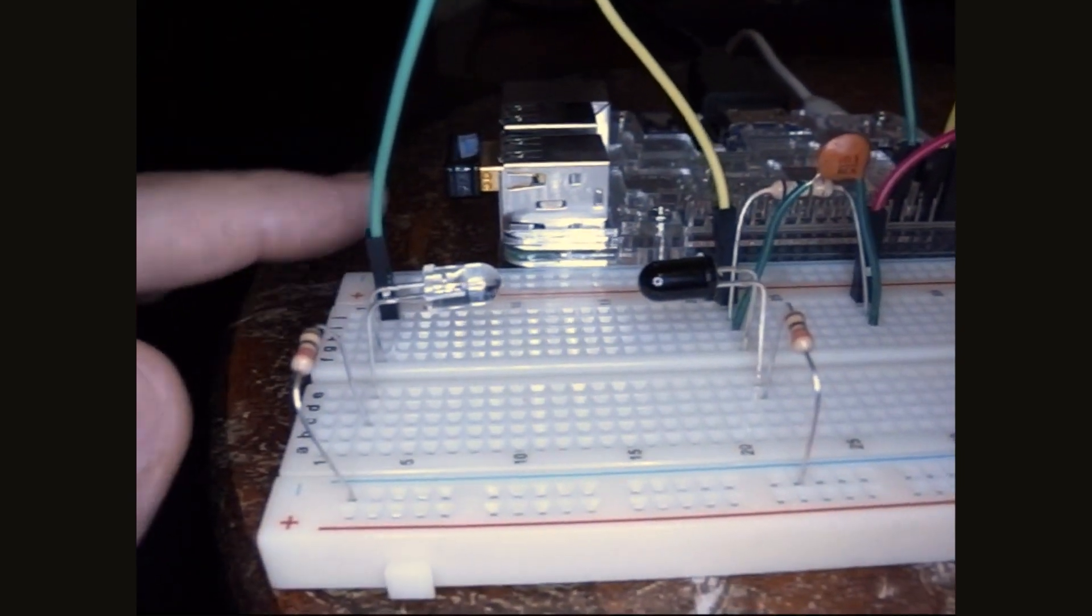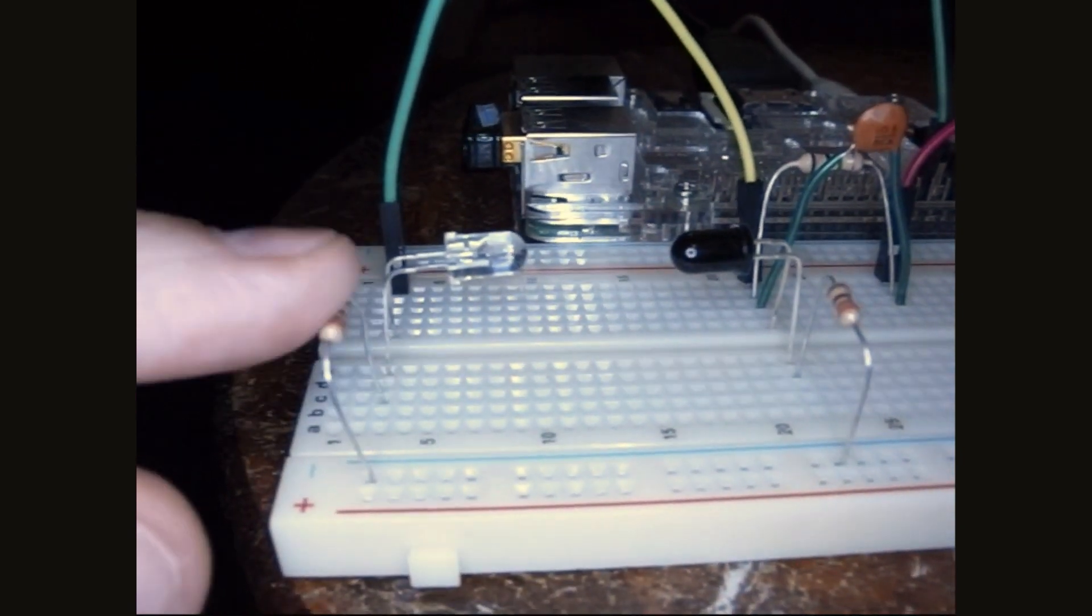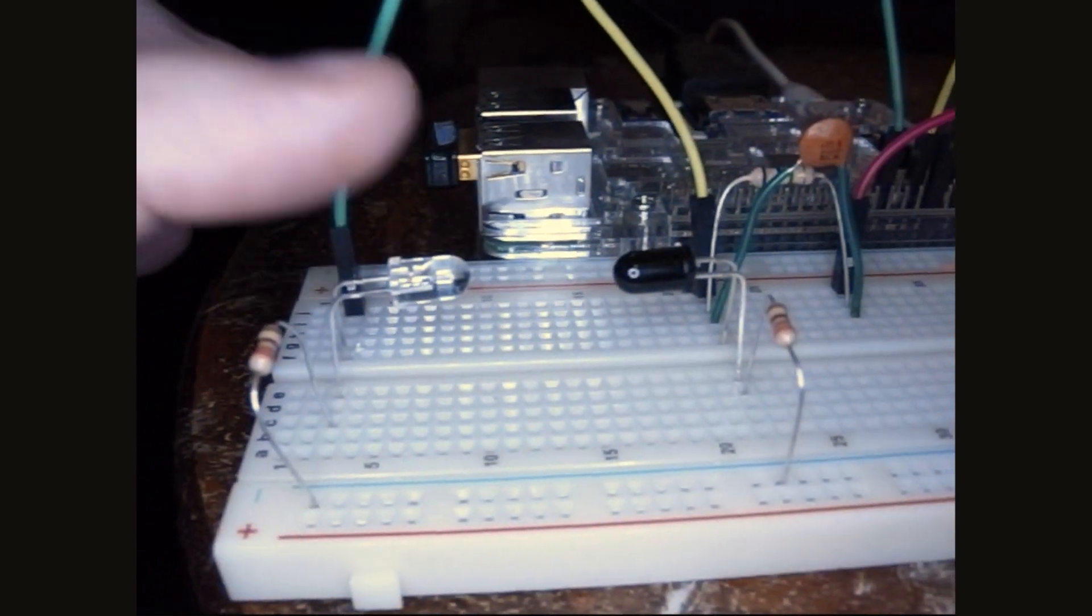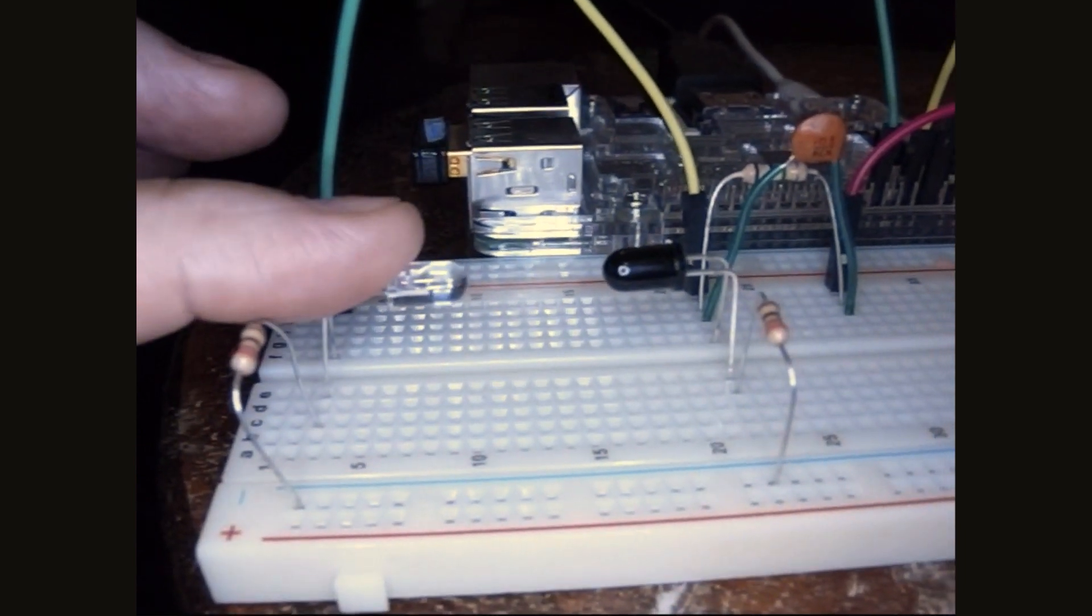This is a close-up on the board. On this side, we just have the infrared LED again, a 330 ohm resistor, and then power coming from the Pi, and the infrared LED.